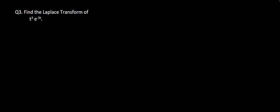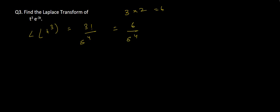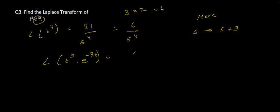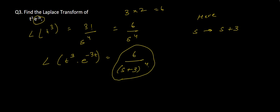Question number 3 says: find the Laplace Transform of t cube into e to the power minus 3t. As we know, the Laplace Transform of t cube is 3 factorial by s to the power 4, and 3 factorial is 6. So here we have 6 by s to the power 4. We also have a term e to the power minus 3t, so our s will become s plus 3. Therefore our Laplace Transform of t cube into e to the power minus 3t will be equal to 6 by (s plus 3) to the power 4.